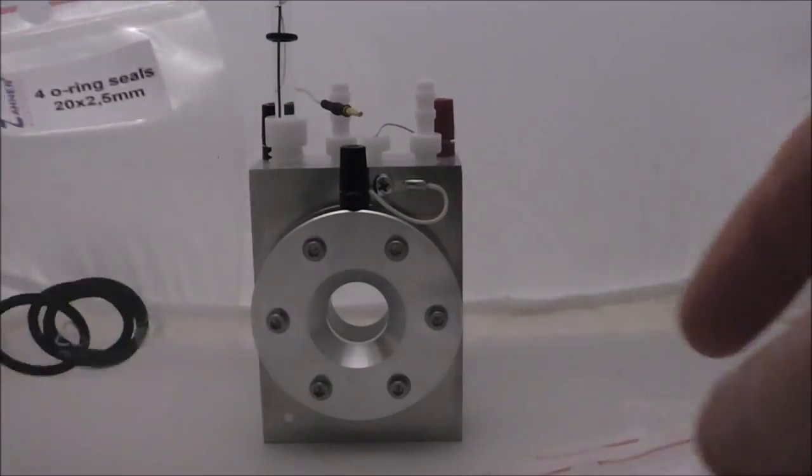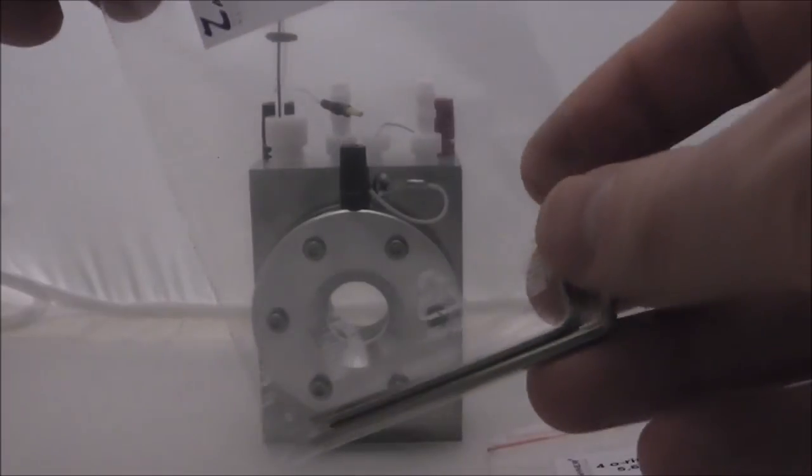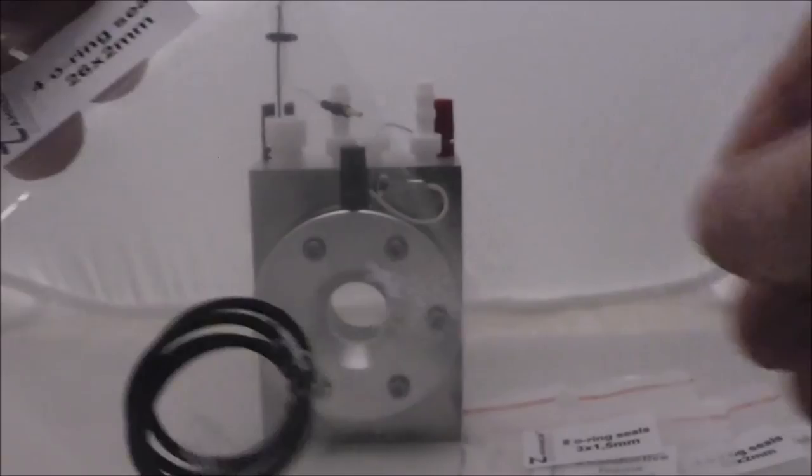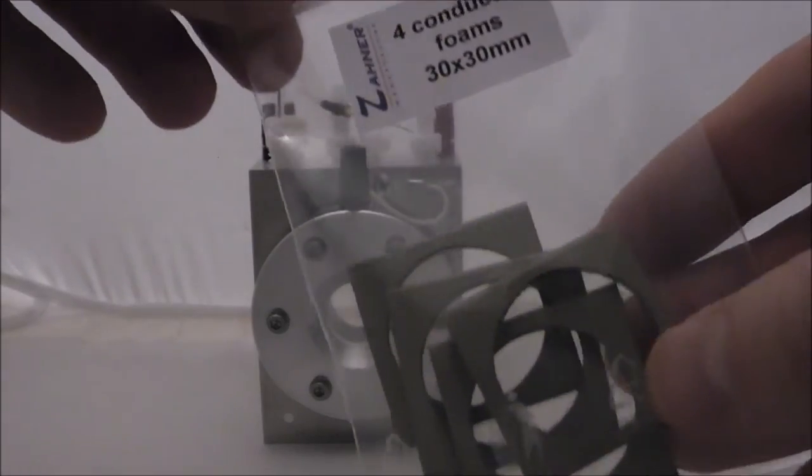They include extra seals, any hex keys or Allen keys that you would require. It's not just one of each seal sent, they send a whole series. Conductive foam is used in the cell as well.